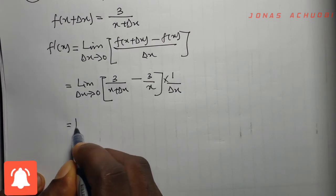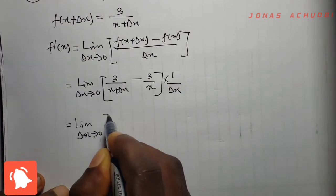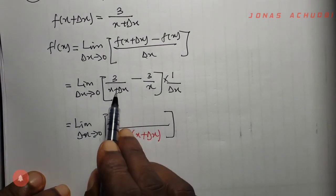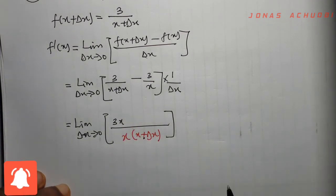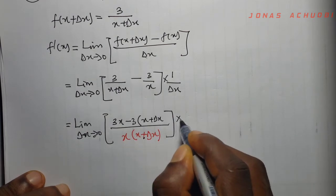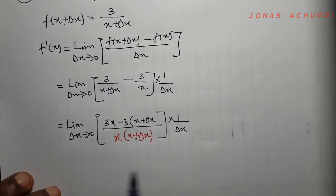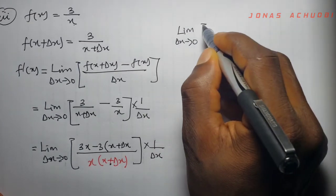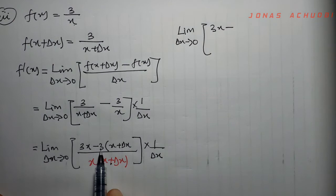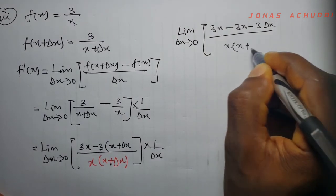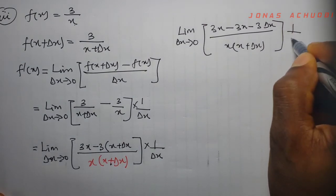If we take the LCM of the terms in the bracket, the LCM is x into x plus change in x. So if this divides into the first term, 3x is left. And if this divides into the second term, minus 3 into x plus change in x is left. This gives us: limit as change in x tends to 0 of 3x minus 3 times x plus change in x, which expands to minus 3x minus 3 change in x, all divided by x into x plus change in x, times 1 over change in x.